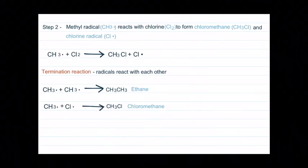When methyl radicals and chlorine radicals react, they form chloromethane. When two chlorine radicals react, they form a chlorine molecule.